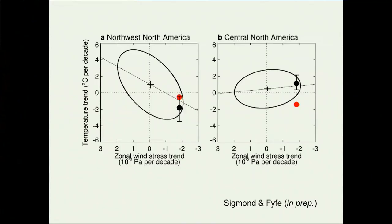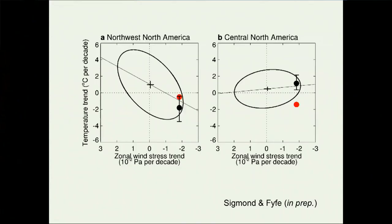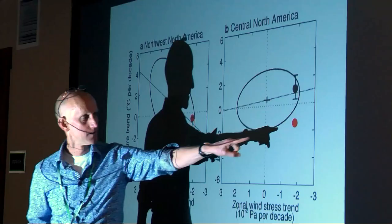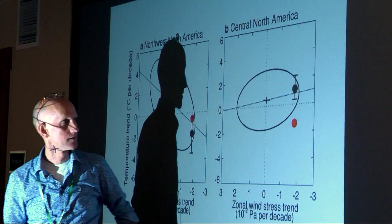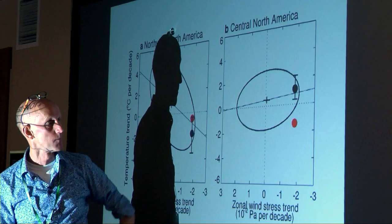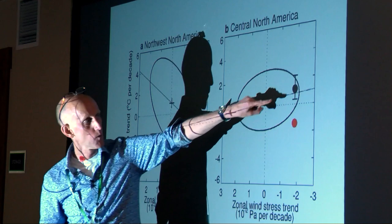Things are not so rosy for central North America. The observations sit outside the 95% ellipse from the large ensemble. The red dot doesn't sit on the relationship between the two variables in the large ensemble, and it's well outside the range of the pacemaker experiments. This indicates that the hypothesis is not working for central North America — it's in a sense a rebuttal of the Palmer hypothesis.